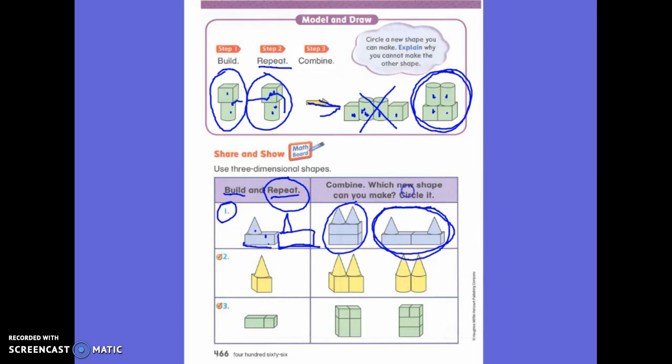Is this cone on top of this rectangular prism? No, it is not. So can this be the correct option? No. Do you see how careful we have to be? We had two cones, we had two rectangular prisms, but were they repeated in the correct way? No, they were not. So we're going to have to be careful about that today. Does everyone understand? Yes.